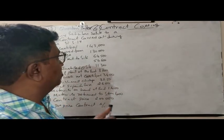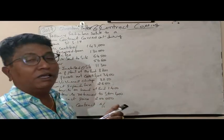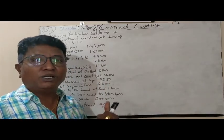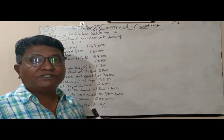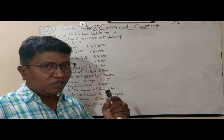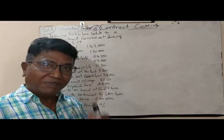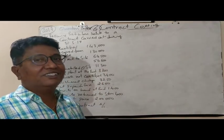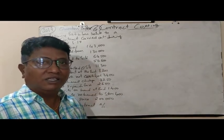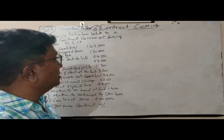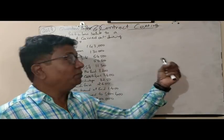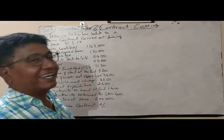Hello, my dear students. Today I want to teach the final year at BCOM, that is 5th semester of BCOM, a subject called costing methods. This subject is for 70 marks per year and 30 marks for internal marks. The chapter name is contract costing.